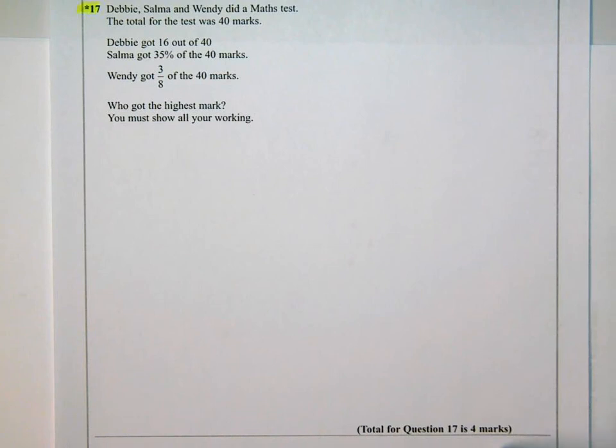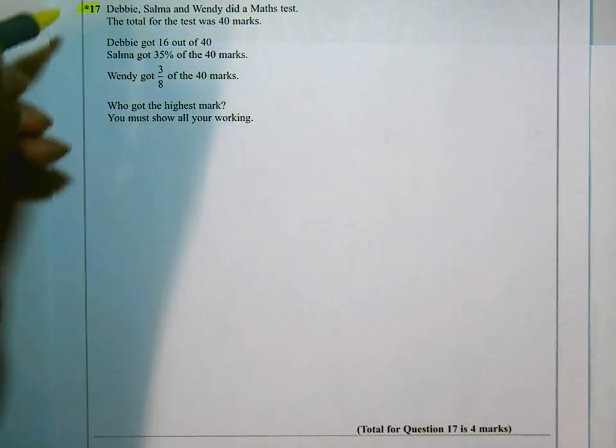there are quality of written communication marks in this question. This question is out of four marks, so at least one of the marks is for the quality of your answer. They want you to set out the answer systematically and show your workings clearly, and put a sentence at the end describing what you've discovered or the answer to the question.